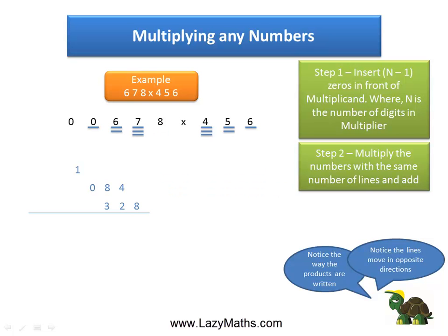The next pattern is 0 times 6, 6 times 5, and 7 times 4. 0 times 6 is 0, 6 times 5 is 30, 7 times 4 is 28, 0 plus 30 plus 28 equals 58. We put 58 also in the carryover format.